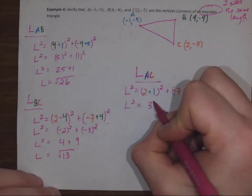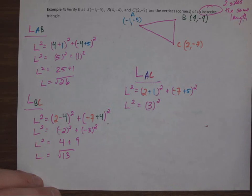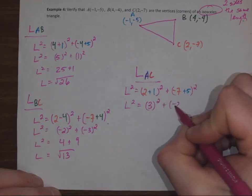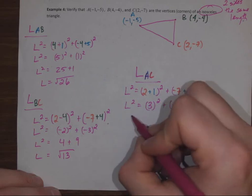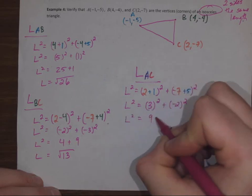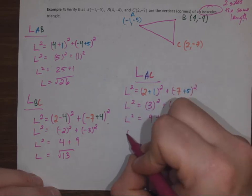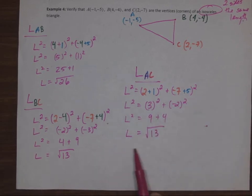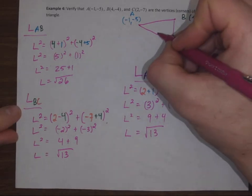Two plus one, three squared, minus seven plus five. Now we have the full length of AC and BC, we compare them, they're the same. So AC...